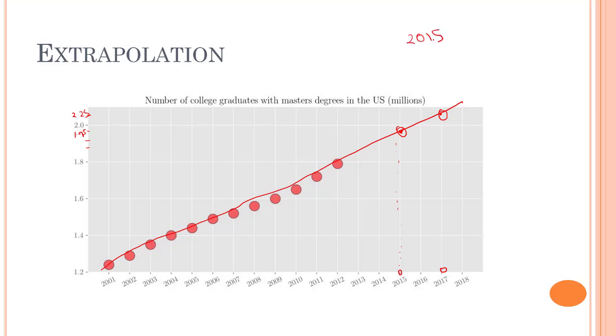We can make our machine learning model to predict that at 2015 - please note that 2015 is a date that our system hasn't seen yet - it has predicted that 1.95 million students will be graduating with a master's degree, and at 2017, it will be 2.25 million. That's all about interpolation and extrapolation.